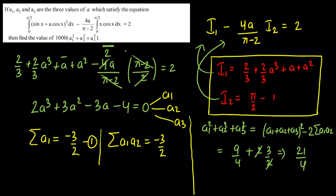Finally, substituting: 1000 × (21/4) = 250 × 21 = 5250. So 5250 is our final answer.